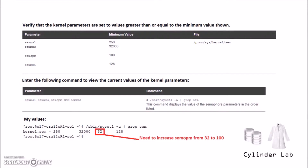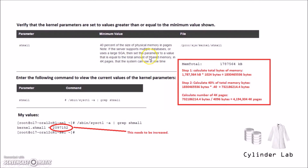Starting with semaphore parameters — the minimum recommended values are here. The command to check them is here. My values are here, and this one needs to be increased. Next, we're going to check this value, which should be at least 40% of the size of physical memory in pages. We calculate what the 40% would be, and the current value is lower, so we're going to need to increase it. This other value should be half the physical memory in bytes — we do the calculation here, and this will also need to be increased.